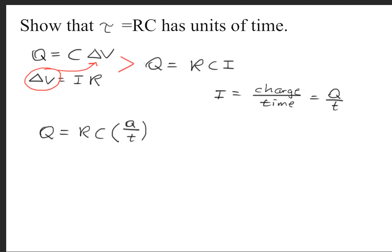Now we know that the current is simply charge per time, so we can rewrite that as Q over t. We'll substitute that in for I, so that we get Q equals RC times Q over t.